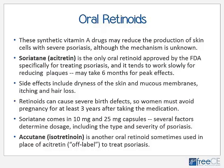Oral retinoids — synthetic vitamin A drugs — may reduce production of skin cells in severe psoriasis. Soriatane (acitretin) is the only oral retinoid approved by the FDA for treating psoriasis. It tends to work quite slowly, often taking up to six months to see peak effects. Side effects include dryness of the skin and mucous membranes, itching, and hair loss. Retinoids can cause severe birth defects, so women must avoid pregnancy for up to three years after taking this medication. Soriatane comes in 10 milligram and 25 milligram capsules, and dosage depends on the type and severity of psoriasis.